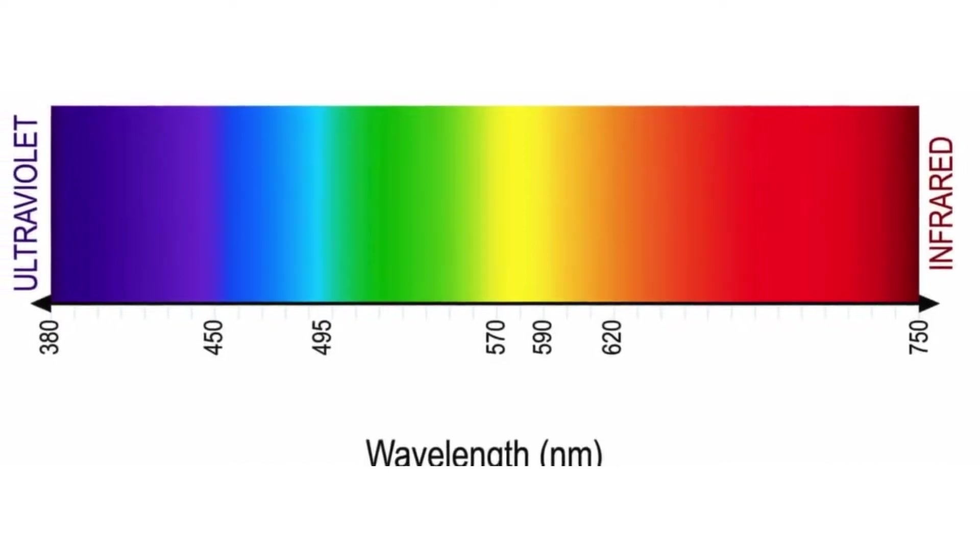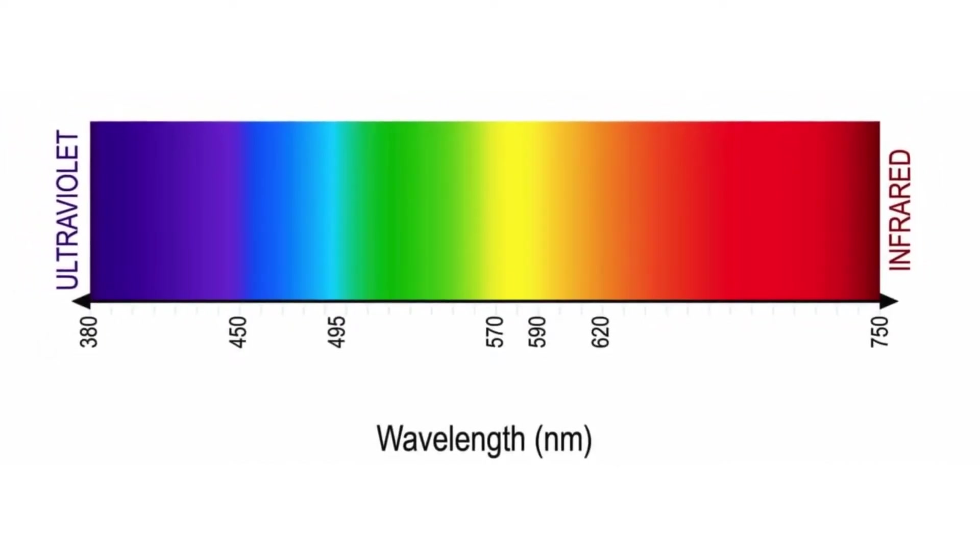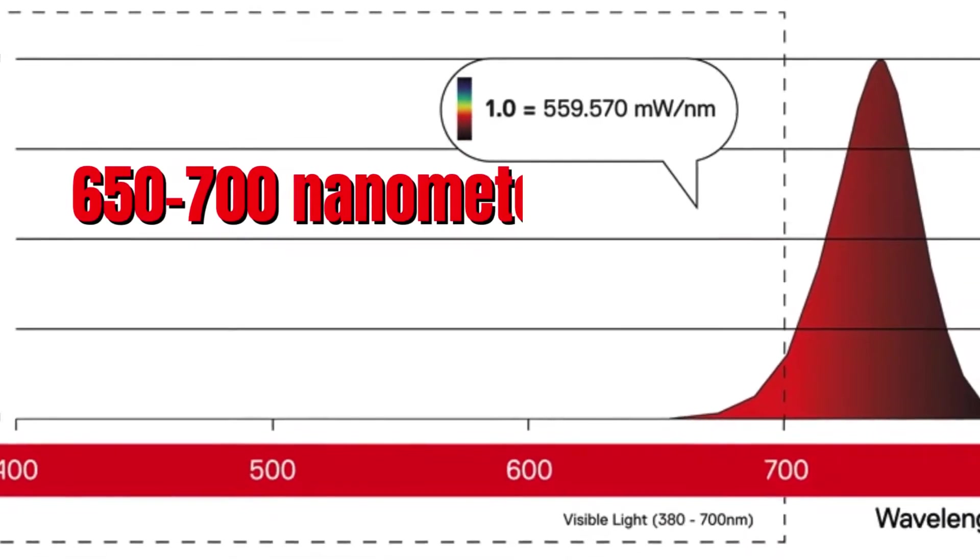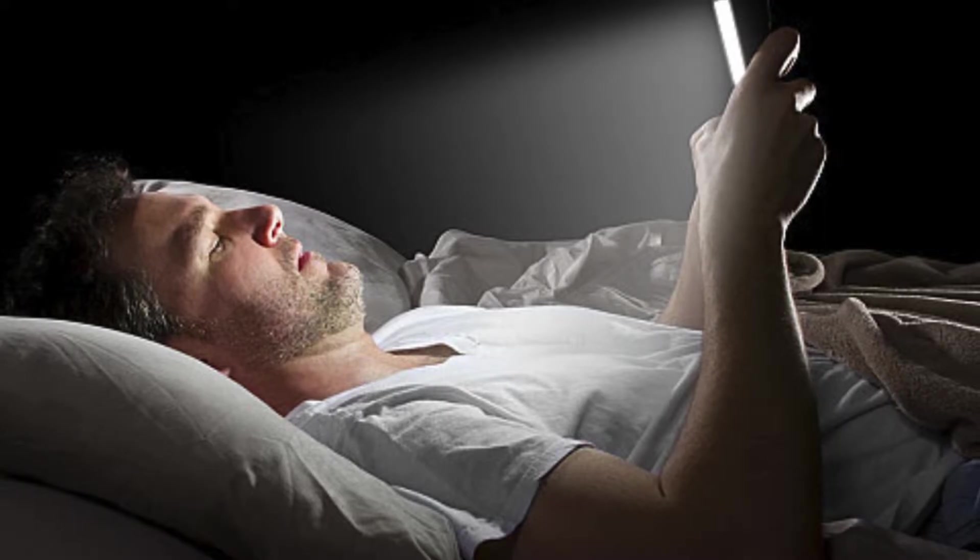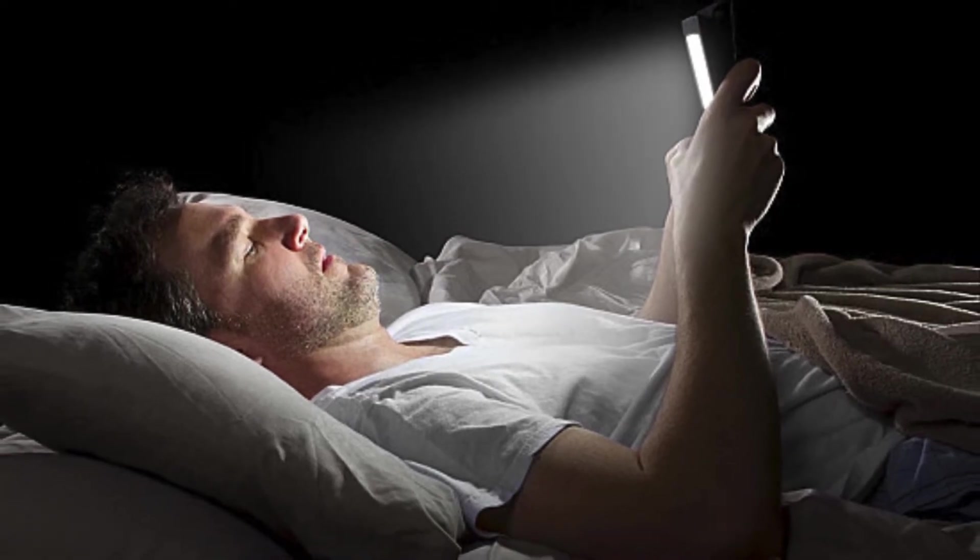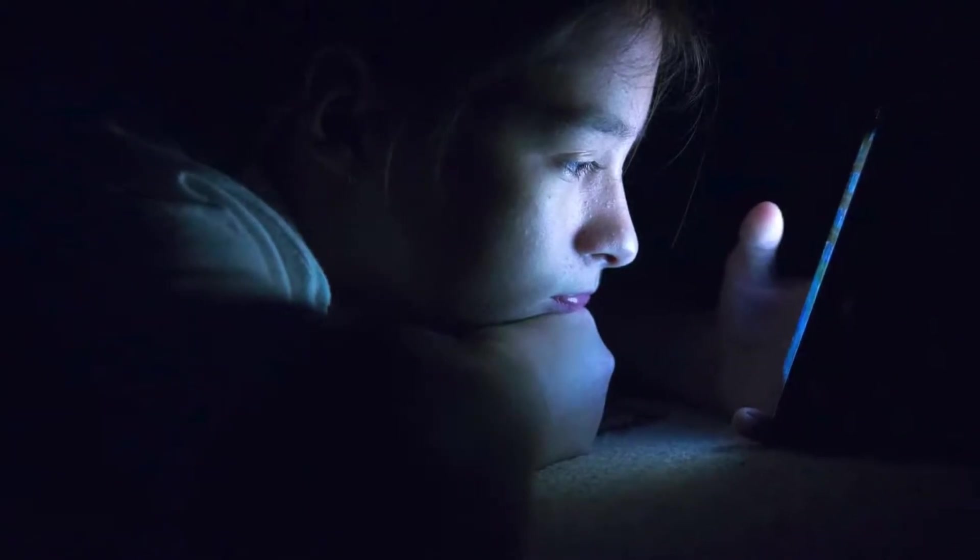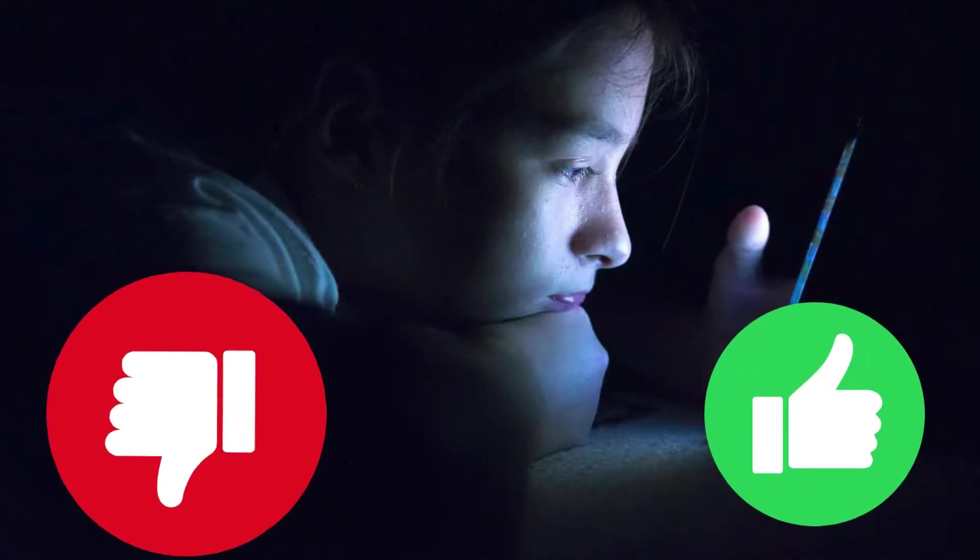This means it carries more energy compared to, say, red light, with its longer wavelengths around 650 to 700 nanometers. This extra energy isn't like physical force, but it's what allows blue light to interact with our bodies in interesting ways, both good and bad.